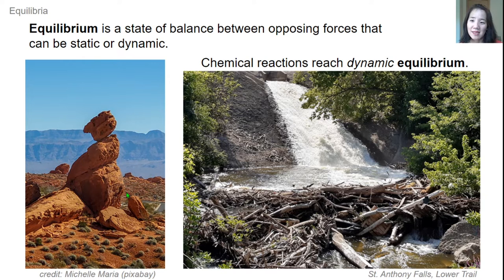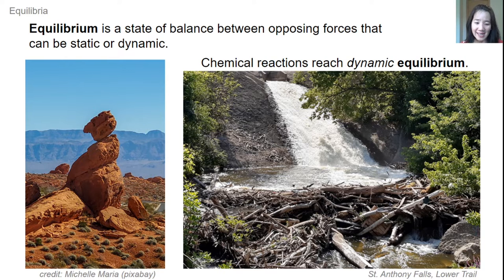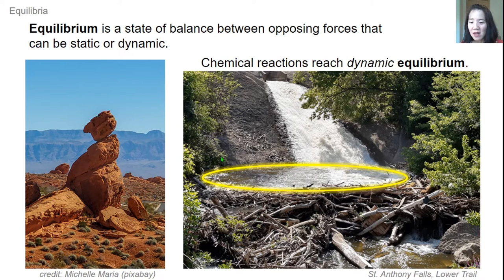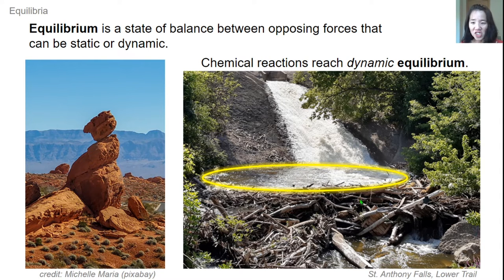Equilibrium is a state of balance between opposing forces that can be static or dynamic. The rocks on the left are static, but this waterfall is dynamic. Chemical reactions reach dynamic equilibrium just like this waterfall. If you focus on the pool of water circled in yellow, the net volume of this pool doesn't change, so it's at equilibrium. It's dynamic because there's water continuously flowing in and continuously flowing out, but that doesn't change the net volume.